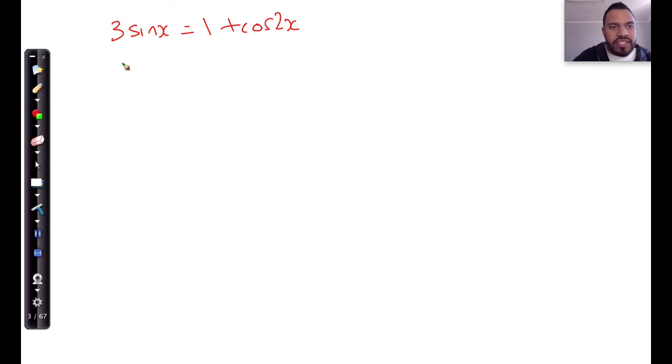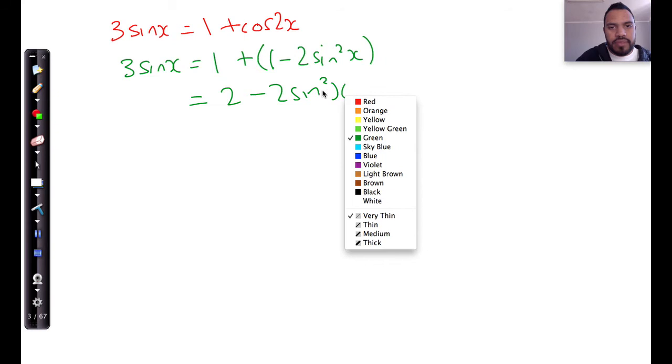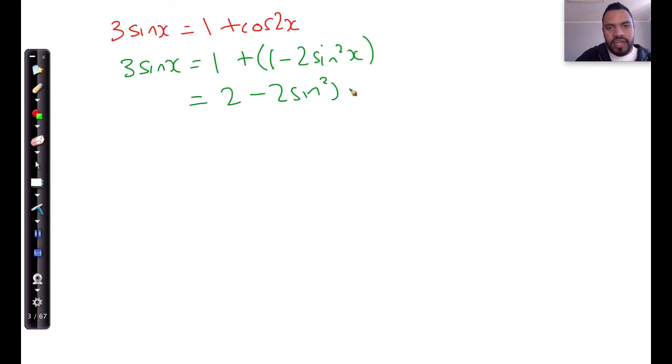So this is going to be 3 sin x is equal to 1 plus cos 2x. The identity with sin is 1 minus 2 sin squared x. And that's going to give me, 1 plus 1 gives me 2 minus 2 sin squared x. So 3 sin x equals 2 minus 2 sin squared x.